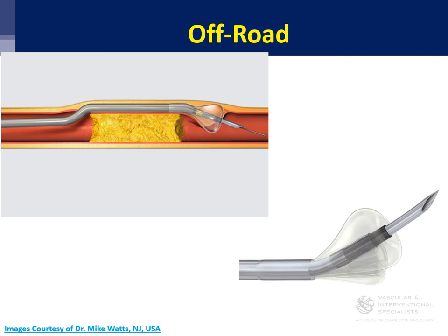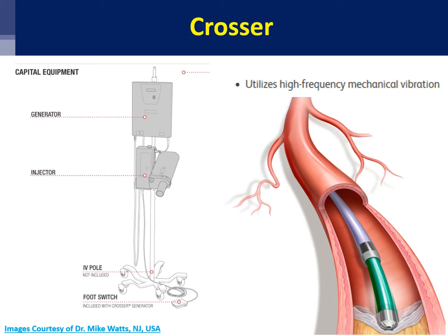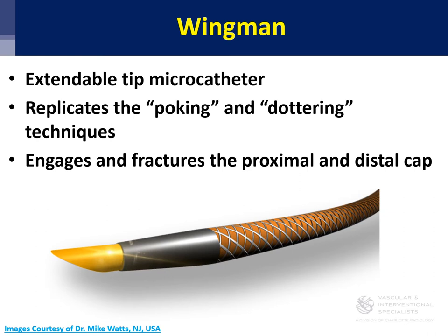The Off-Road re-entry device is similar — it has a funnel-shaped end you direct toward the true lumen, and like the Outback, you visualize it by angiography. Another one is the Enteer catheter, which relies on a balloon that orients itself within the vessel toward the true lumen, then relies on a needle throw. The Crosser catheter is not a re-entry catheter but utilizes high-frequency mechanical vibration to help your catheter stay true lumen instead of dissecting into the subintimal plane. Some people use it heavily, some not at all — but it's a powerful tool if you need to stay true lumen and get comfortable with the device.